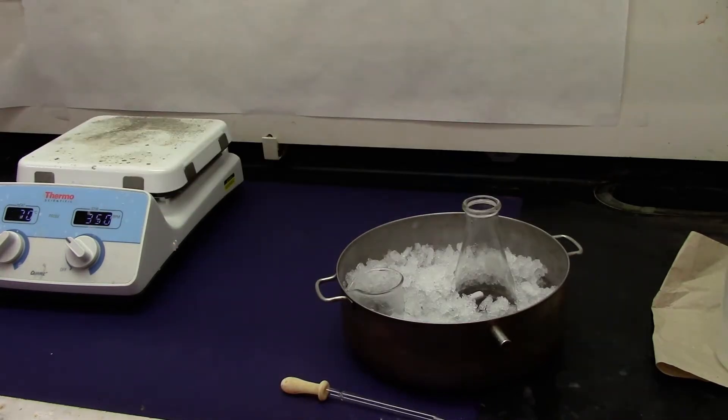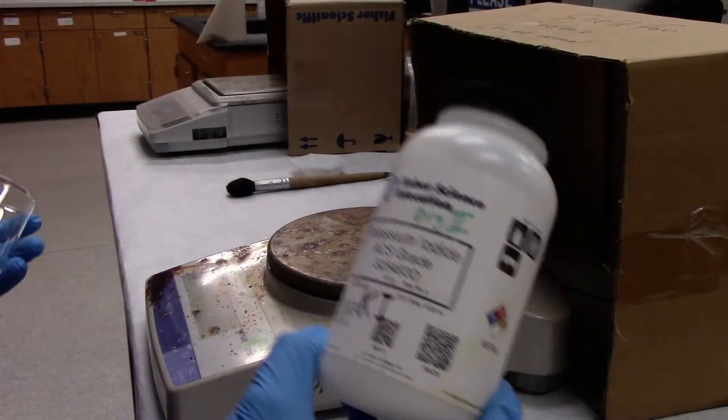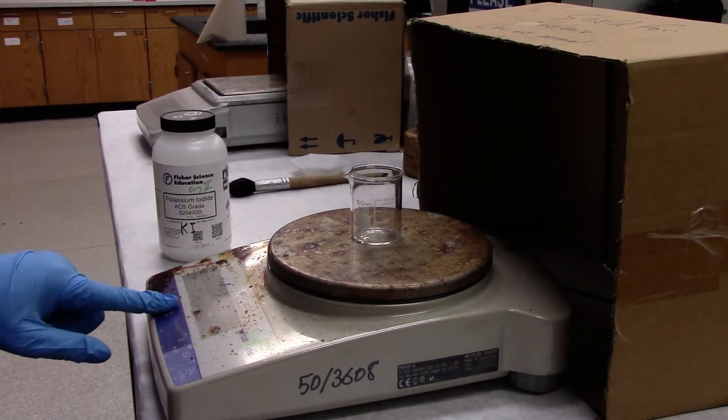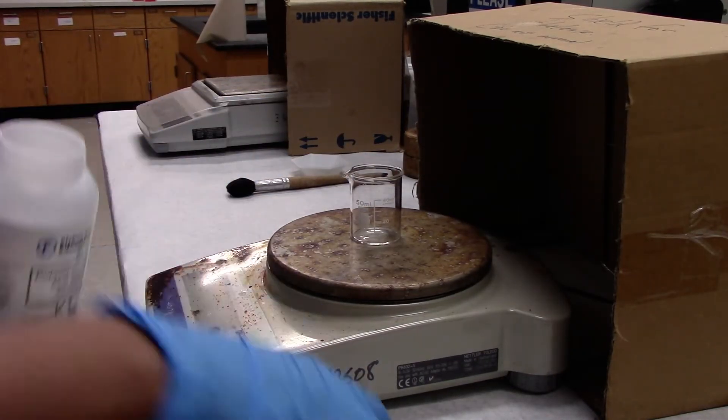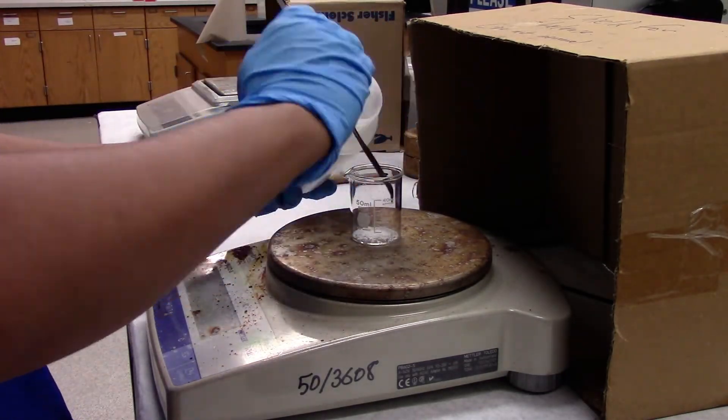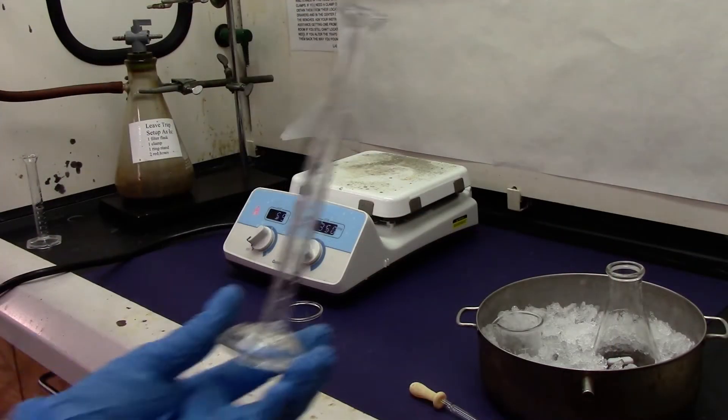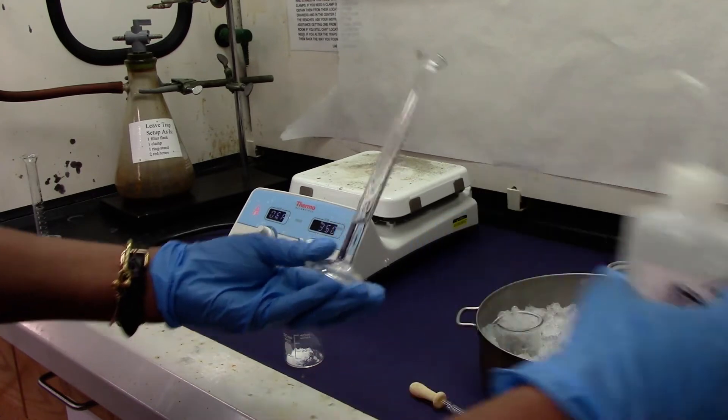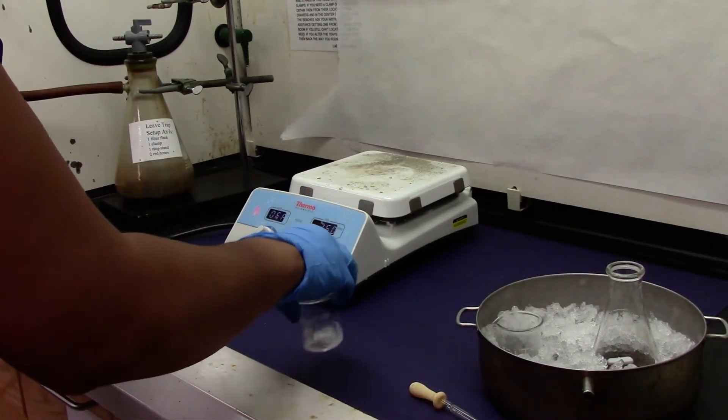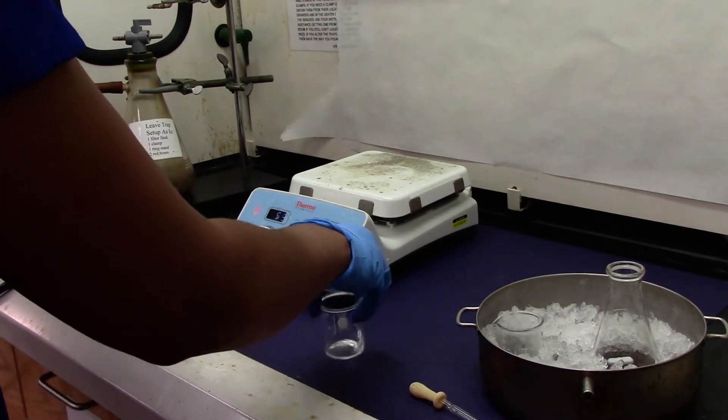We'll give it about 5 to 10 minutes for both solutions to cool down before we start adding. Weighing potassium iodide in a small beaker. Tare the beaker and add approximately 1.8 grams of potassium iodide. To the potassium iodide I'm going to add 3 mL of DI water, swirl to make a solution, and let it stand for a few minutes.